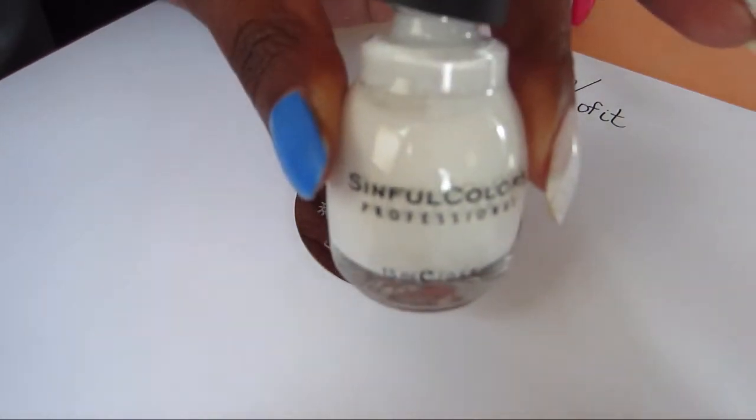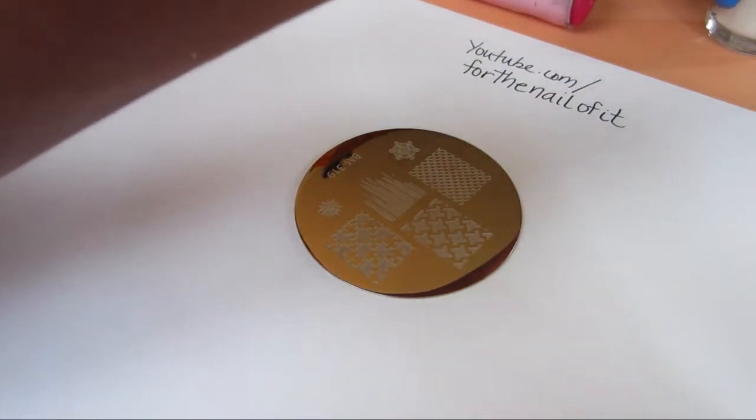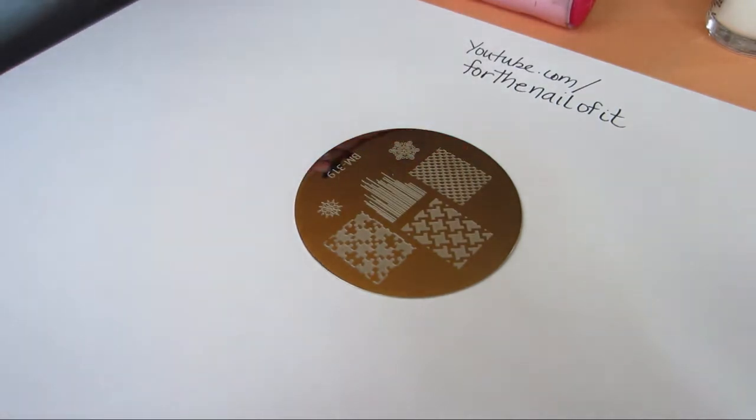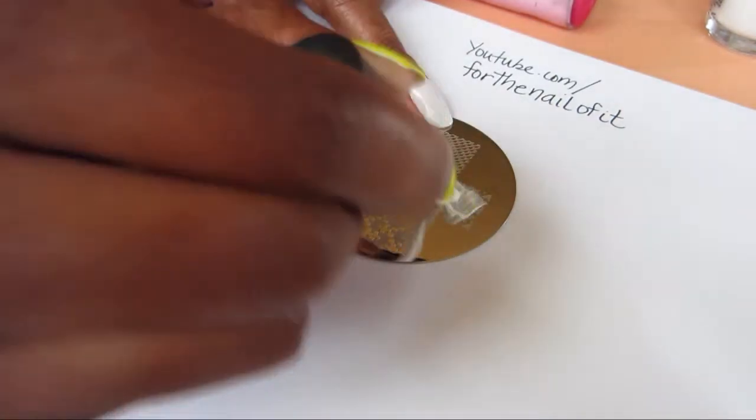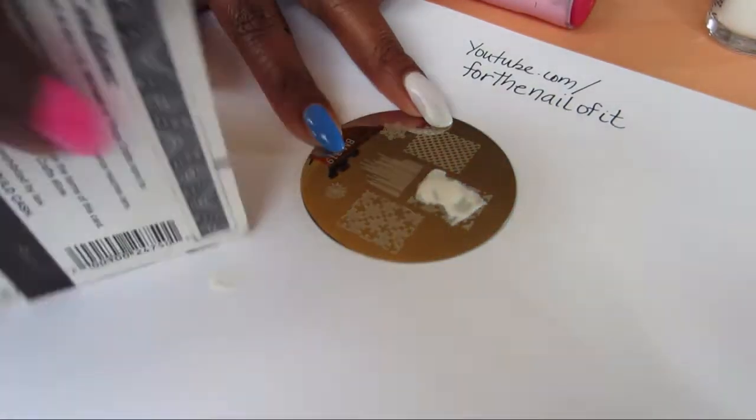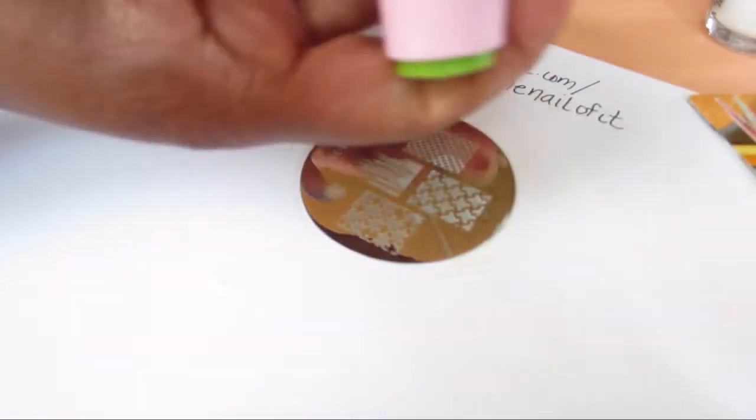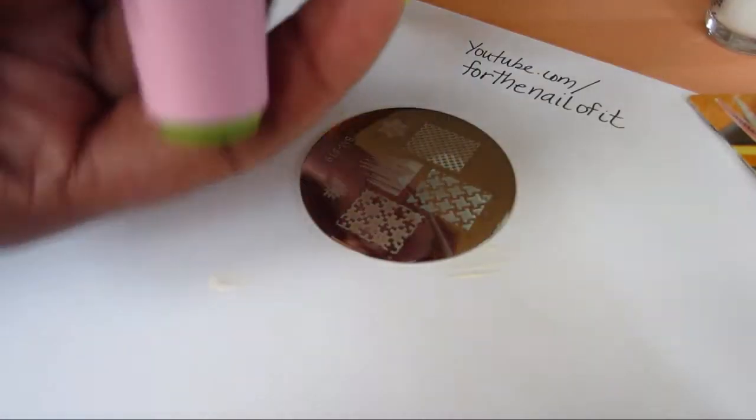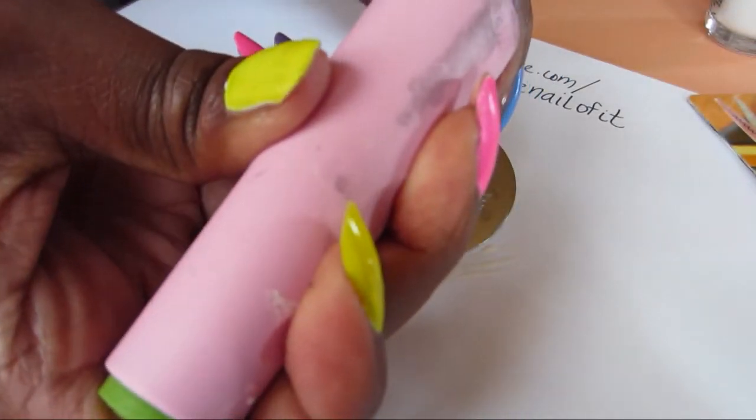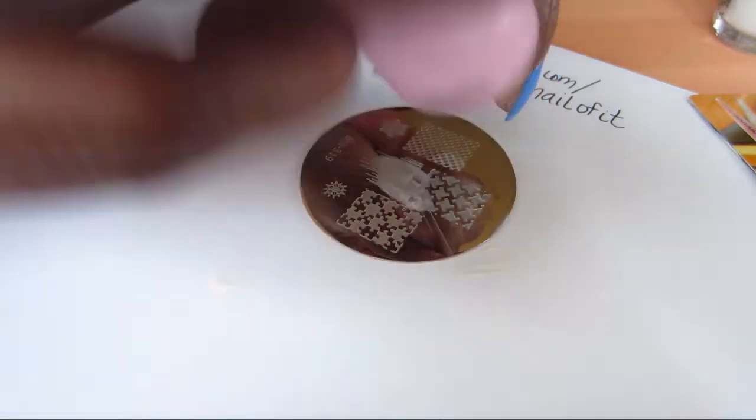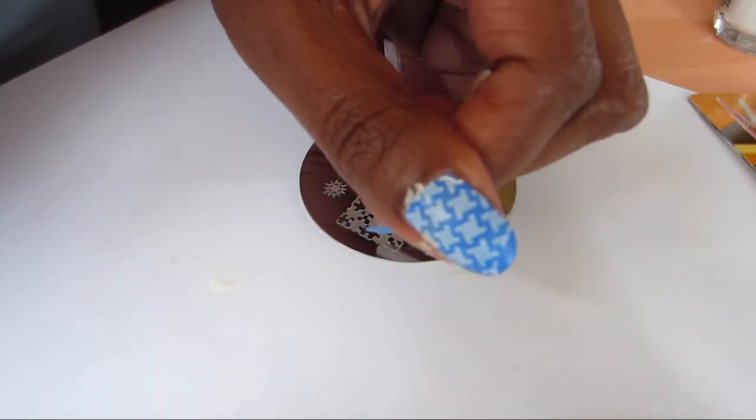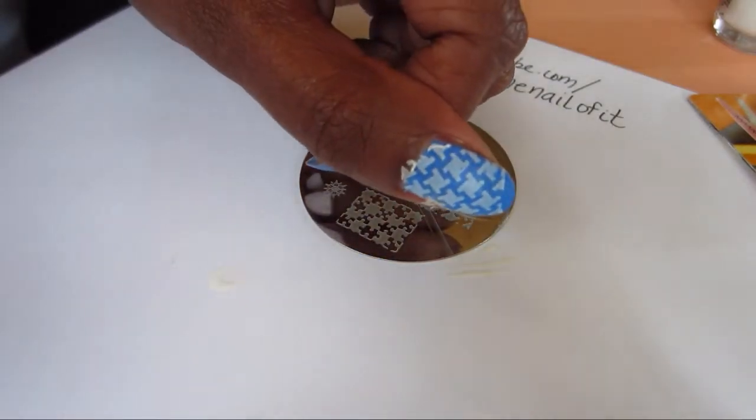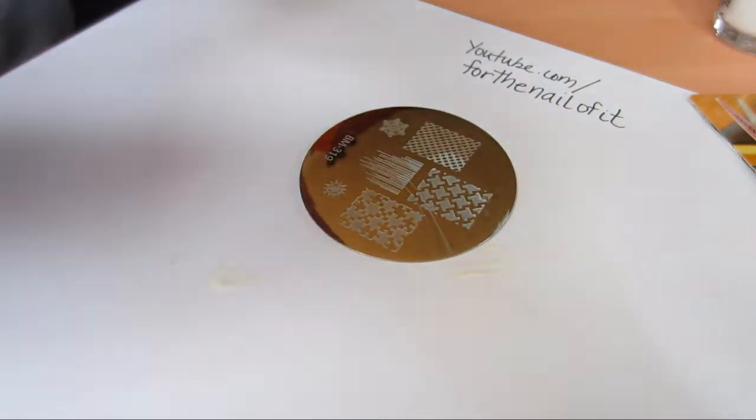And today we're going to be using the Simple Colors Snow Me White. So let's use plate number 319. Use this design right here. Picked up really well. And there's the design. I think that looks really good. I'm sure the Conad white polish would be a little more opaque, but so far so good.